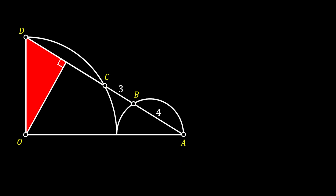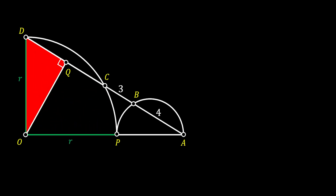We will also mark the remaining vertex of our right triangle as Q, and the connection point between our quarter circle and our half circle as P. Now let's notice the line OD — it represents the radius of our quarter circle and we will label it as R. The line OP is also equal to R.